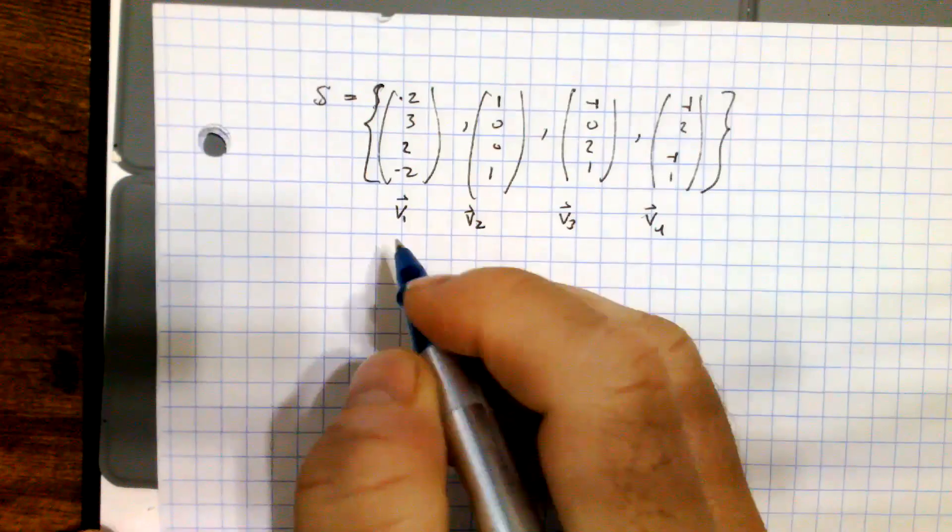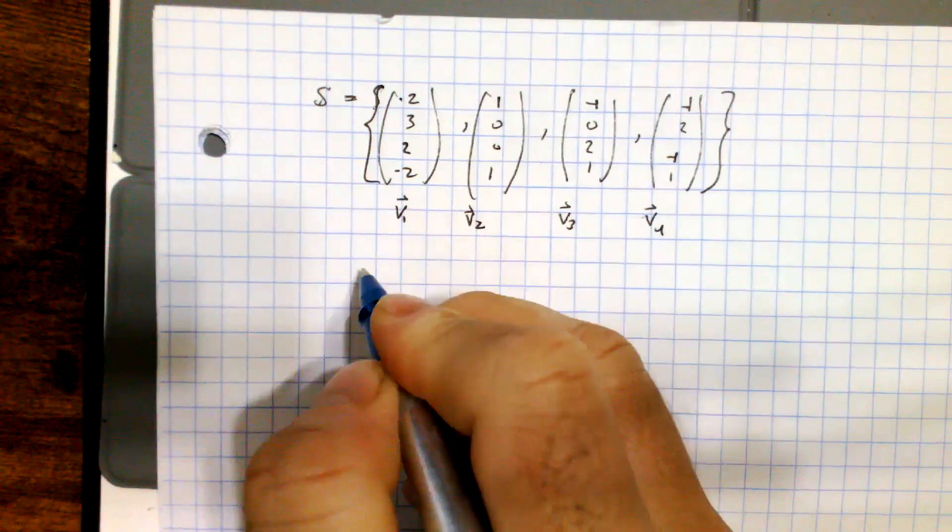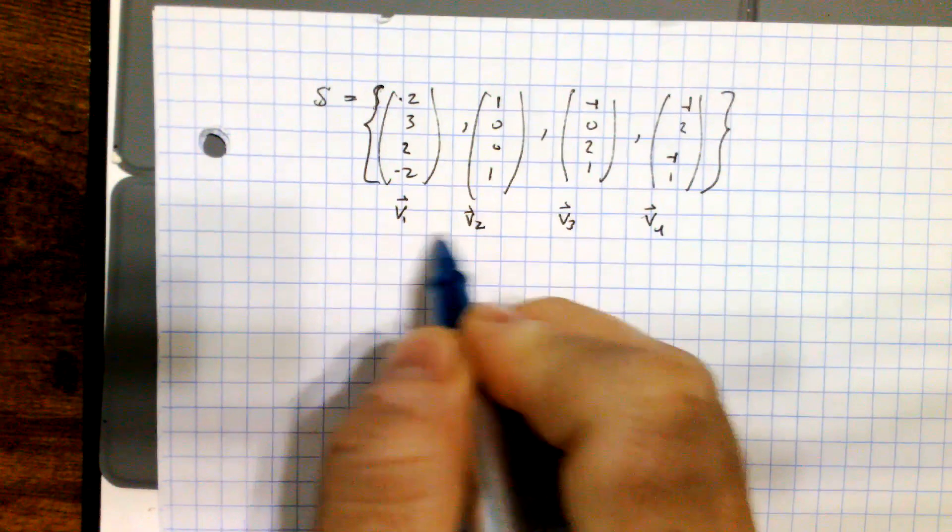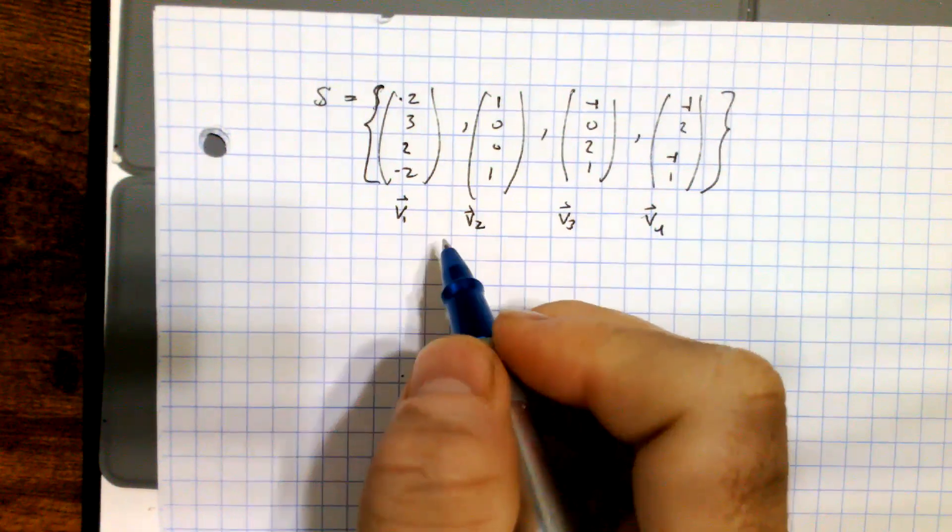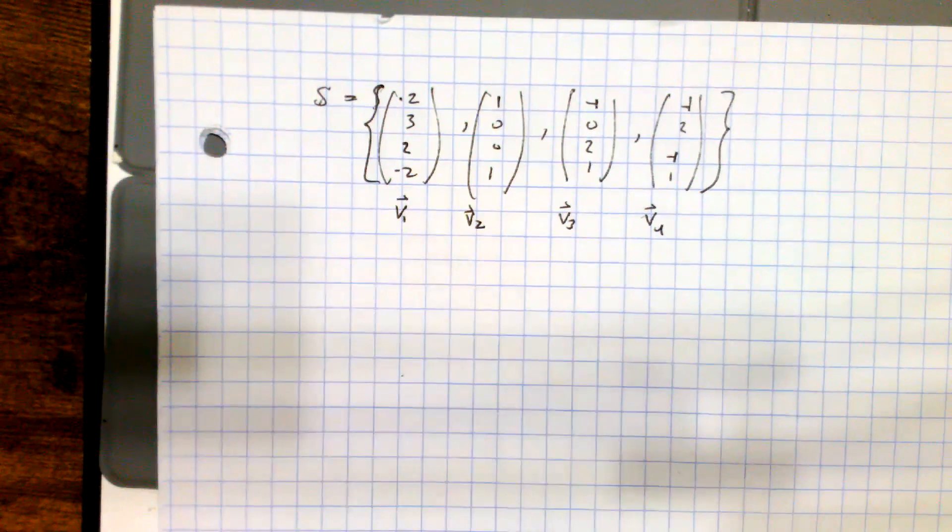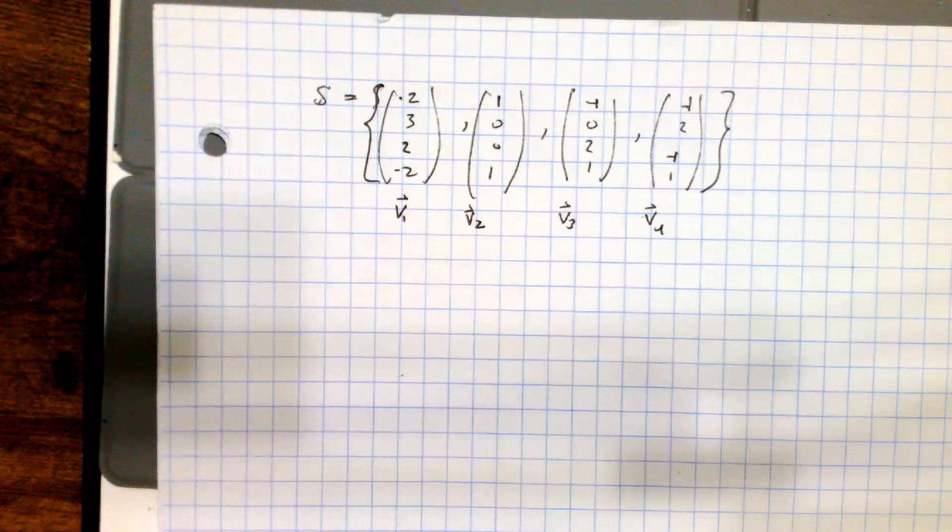All right, in this example, we want to utilize the power of the last theorem, which stated that if the set of B1 through whatever dimension you have is from an inner product space, and that they're orthogonal, then they form a basis for your set. In other words, they'll be linearly independent.